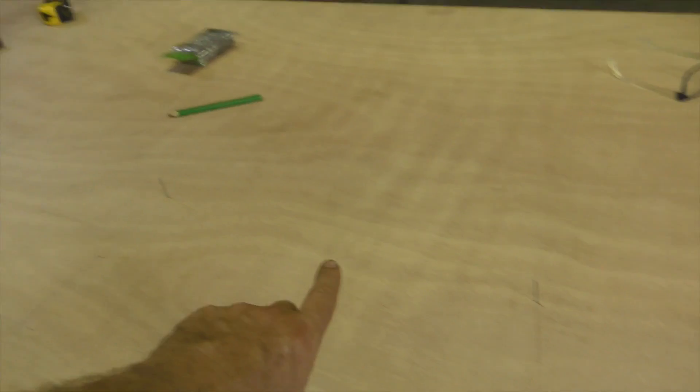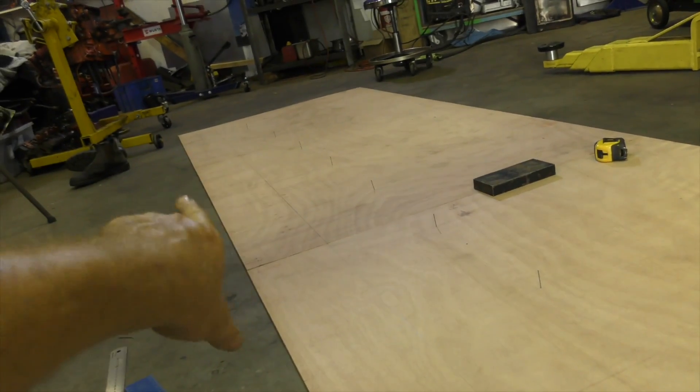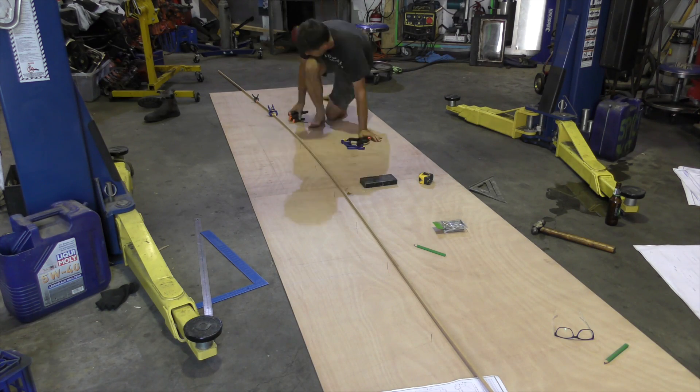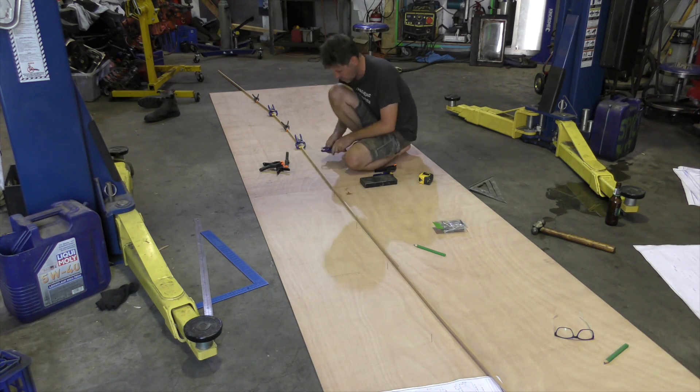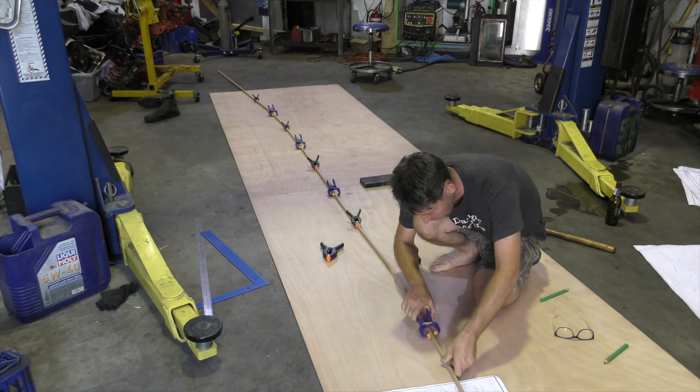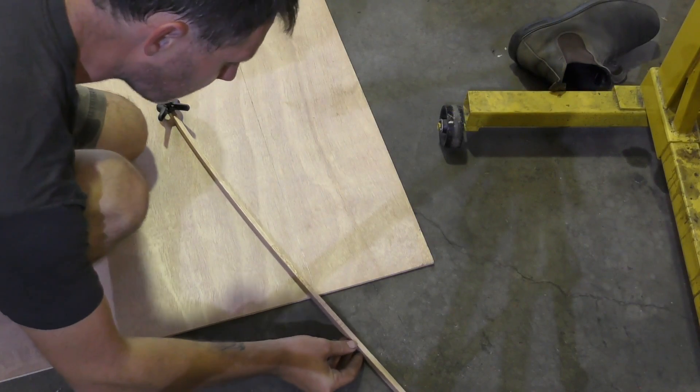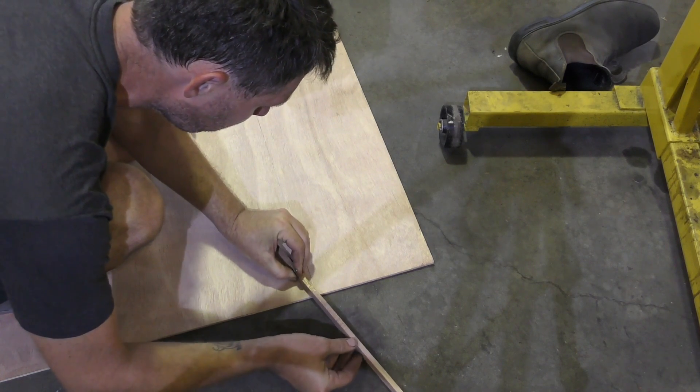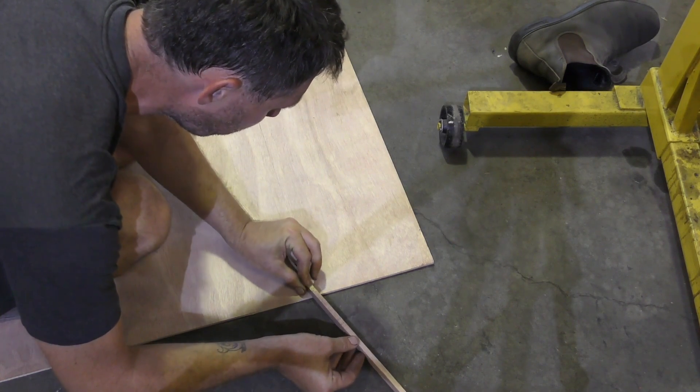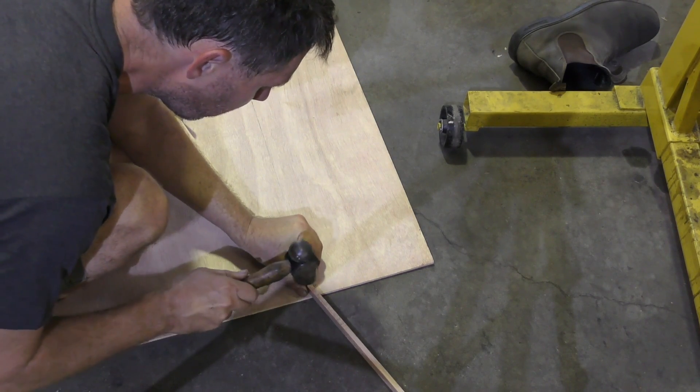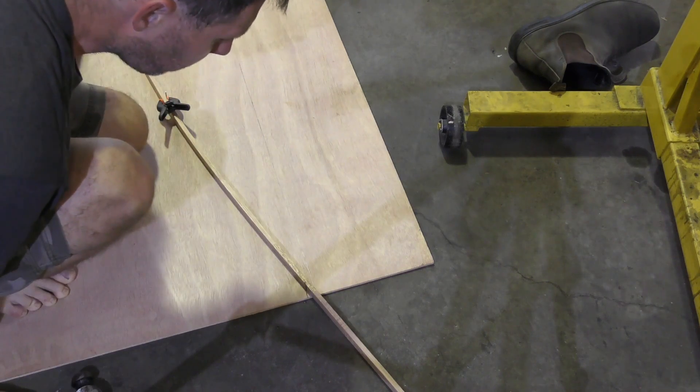Now what we need to do is clamp a batten to all the nails and draw this curved line. Here this comes to a point against this line, so I'm just going to press it up against, put a nail pretty close.